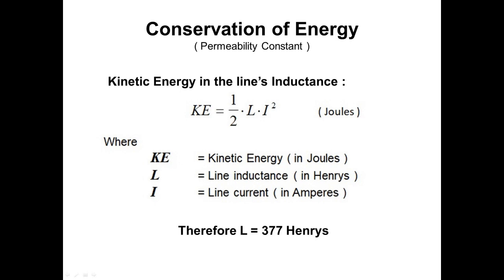The remaining energy must be stored in the magnetic field of the line as kinetic energy. The kinetic energy stored in an inductor, in this case the inductance of the line, is given by this equation. Ke equals one-half times L times I squared in joules. Where Ke is the kinetic energy expressed in joules, L is the line inductance expressed in henries, and I is the line current expressed in amperes. Since the line current I and the total inductive energy Ke are known, the total inductance of the line L can be calculated with the above equation, yielding a value of L equals 377 henries.